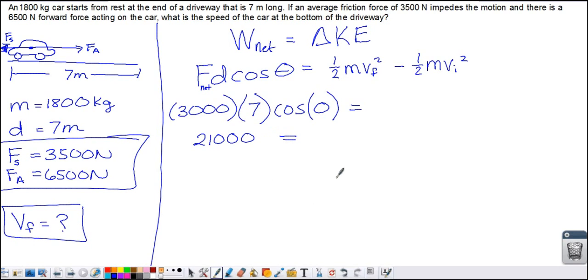On the right-hand side, we have one-half the mass, 1,800 kilograms, times the final velocity squared, which we don't know, minus one-half 1,800 kilograms times the initial velocity. An 1,800 kilogram car starts from rest. So we missed that earlier in our givens. It starts from rest. The initial velocity is zero. In this term, we're going to have zero squared, which is zero, and then zero times all this, which is going to be zero. So this term is just going to disappear.